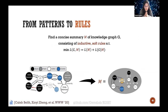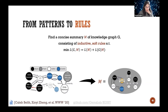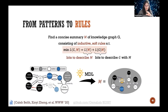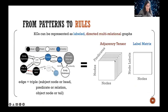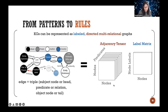So far we've talked about simple structural patterns like paths, stars, and cliques. Now I want to go beyond those and talk about rules that combine structure with rich semantic information. The formulation is similar: find a concise summary, in this case of a knowledge graph, consisting of inductive soft rules, minimizing the description length of the model — which contains rules — and the bits needed to describe deviations from that model.